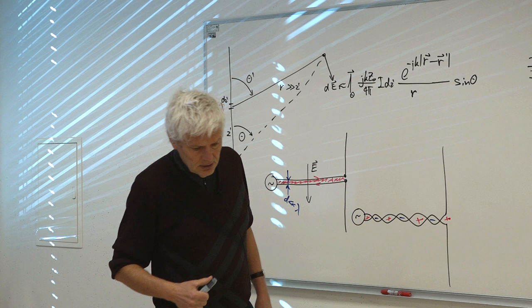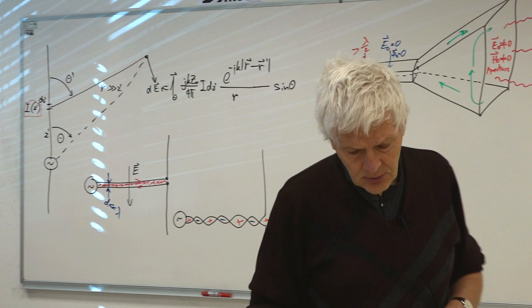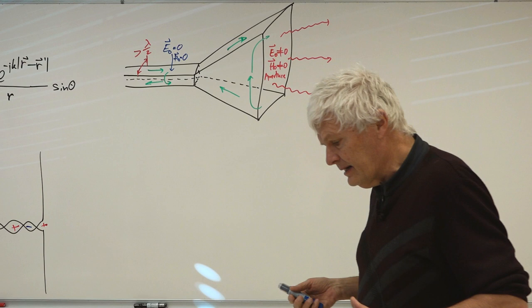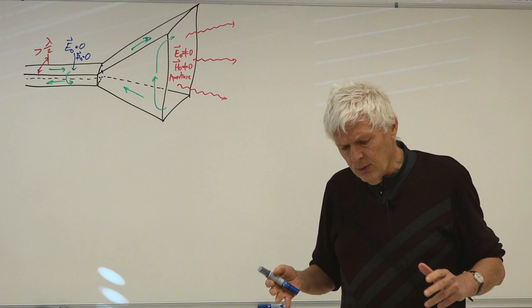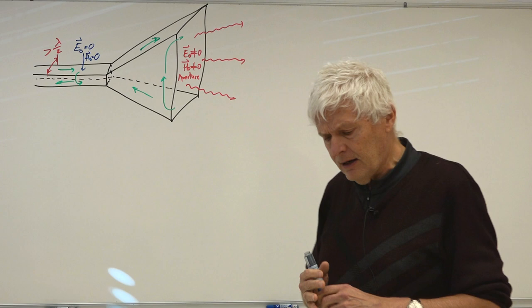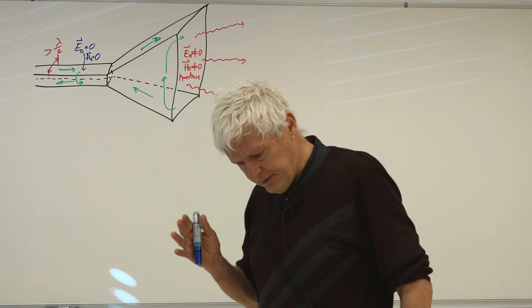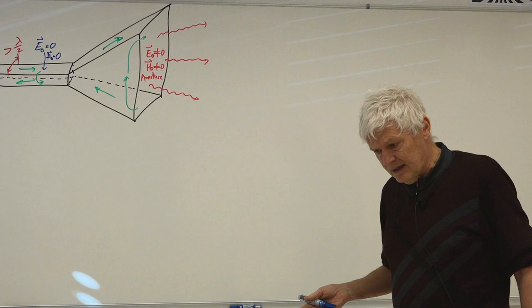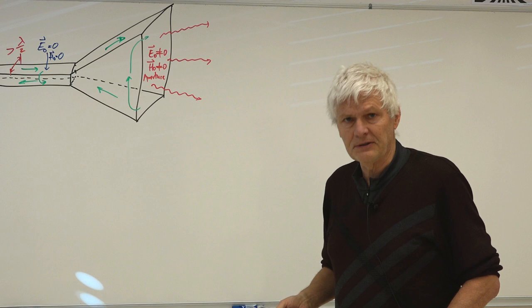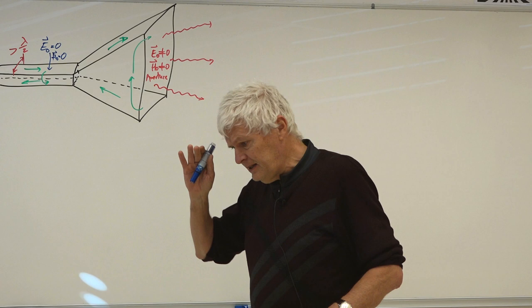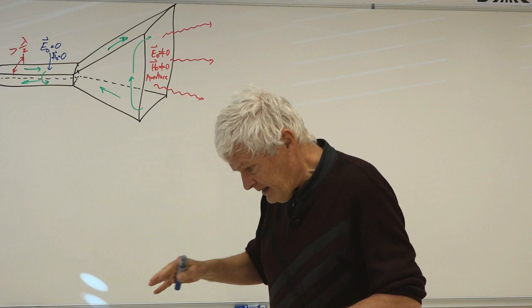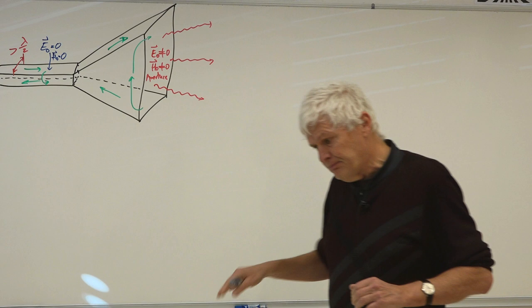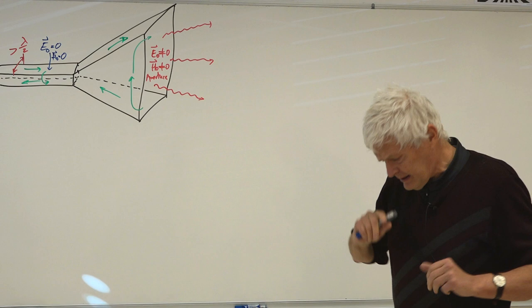A well-known Dutch physicist and astronomer, Christiaan Huygens, really wanted to find out how light propagates. He didn't know light was electromagnetic radiation, but he suspected it was waves. The easiest way to observe waves if you live in the low-lying Netherlands was to observe waves on the sea surface. The Dutch were very good at building dams — they even reclaimed land from the sea by building dams and pumping out water.